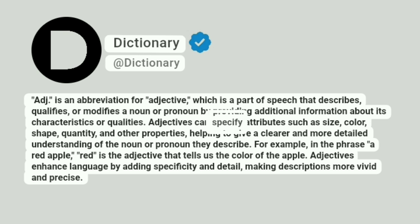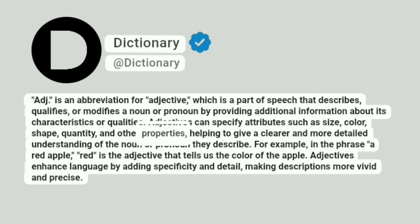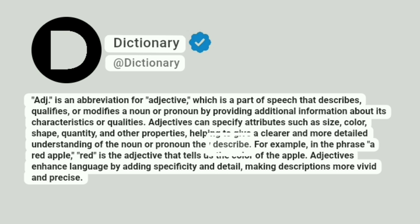Adjectives can specify attributes such as size, color, shape, quantity, and other properties, helping to give a clearer and more detailed understanding of the noun or pronoun they describe.